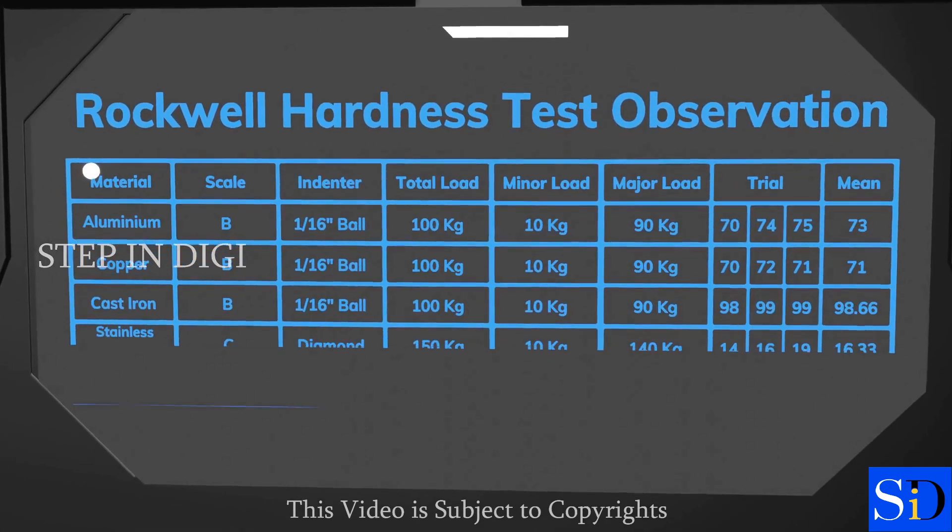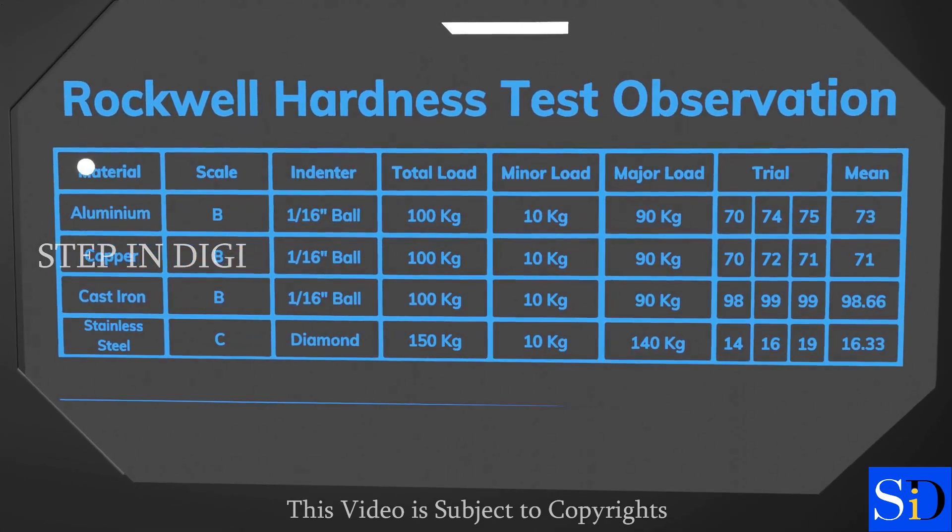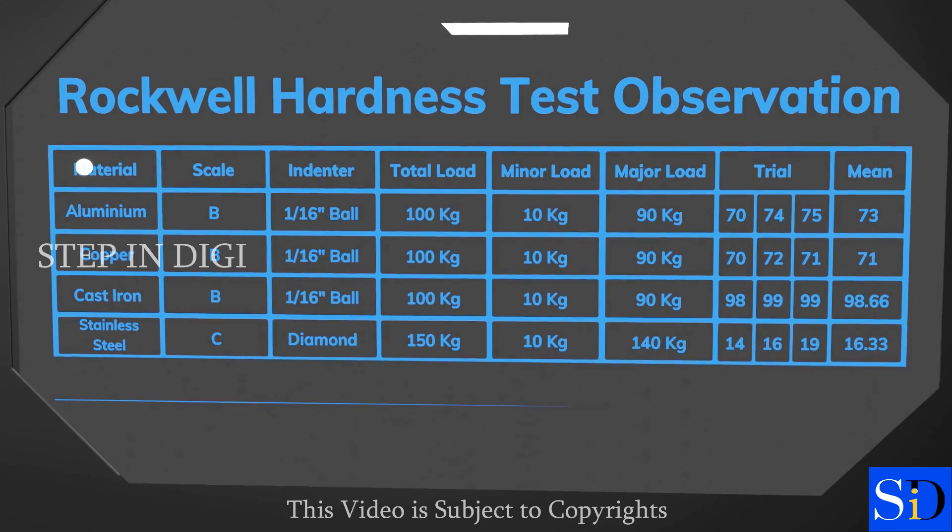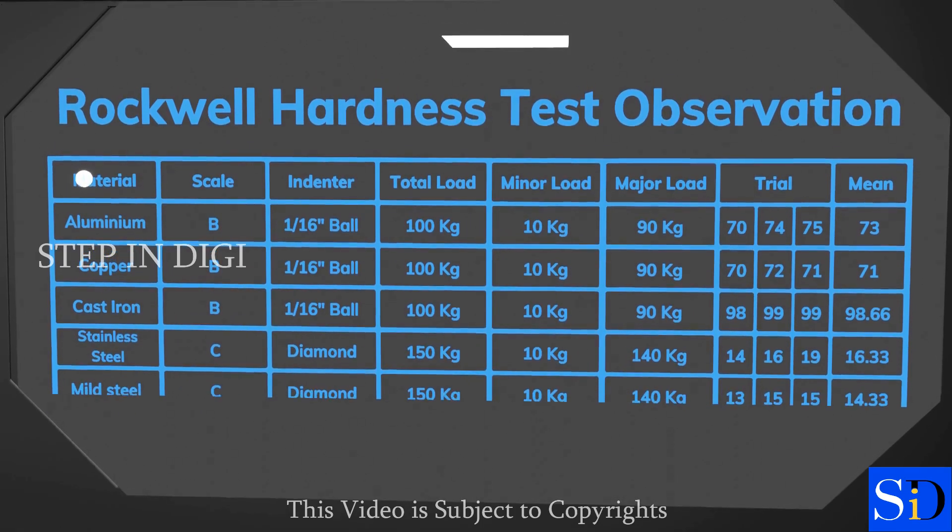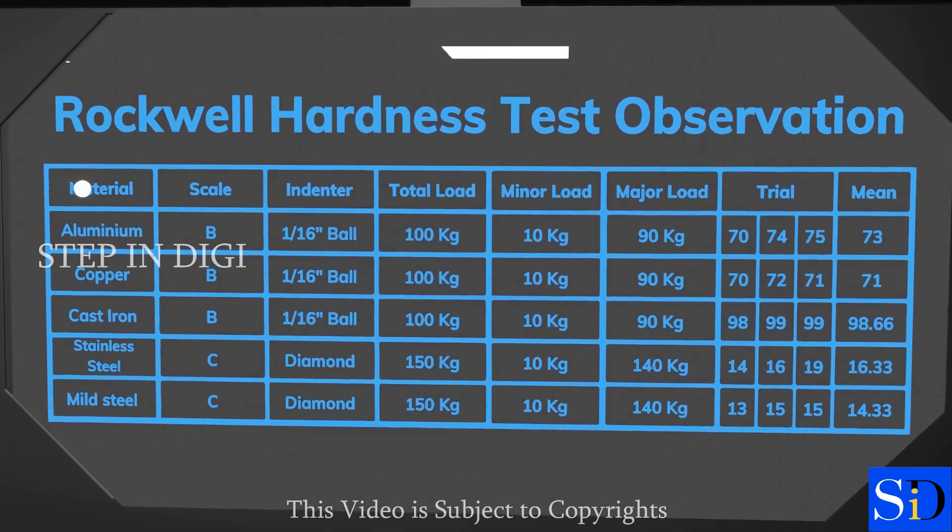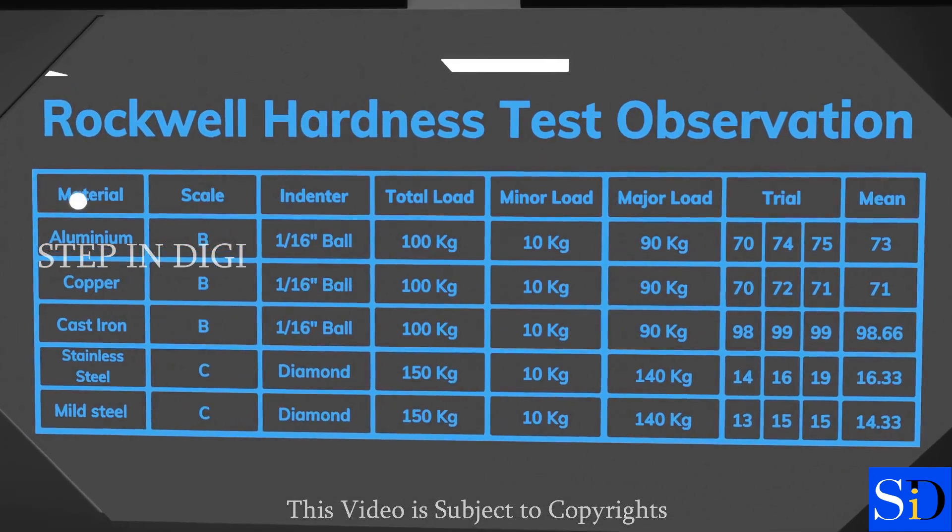So now, calculating the mean hardness value for stainless steel, we found it to be 16.33. Similarly using diamond indenter, we found out the mean hardness value of mild steel to be 14.33.